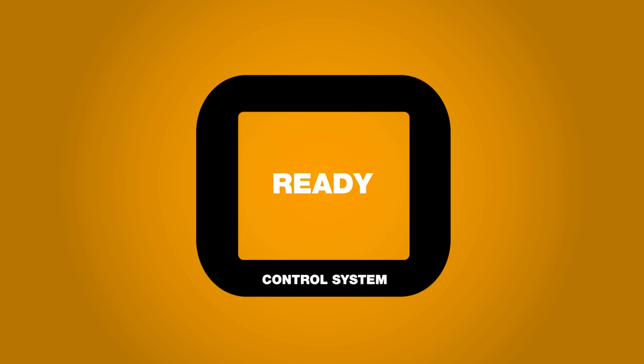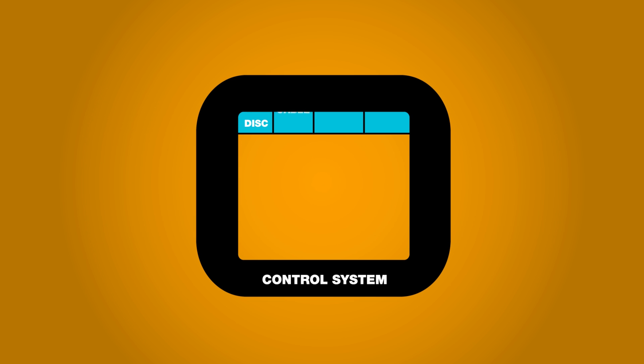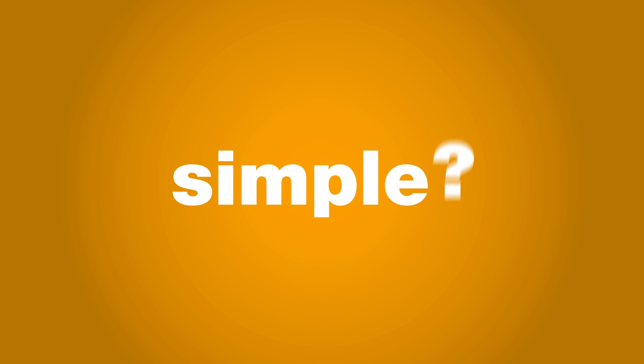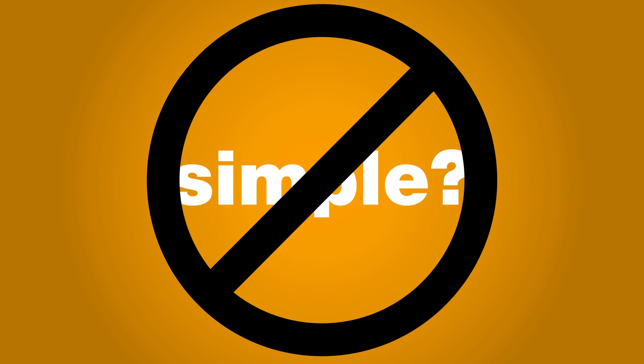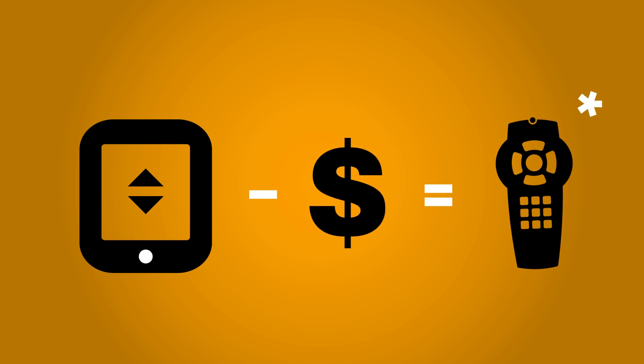Enter the control system. With the control system, you can take all those devices and put them together into a single interface that only lists the options you need. That's great, but it doesn't really simplify your life all that much. Truth be told, all you've done is paid for a really fancy universal remote.